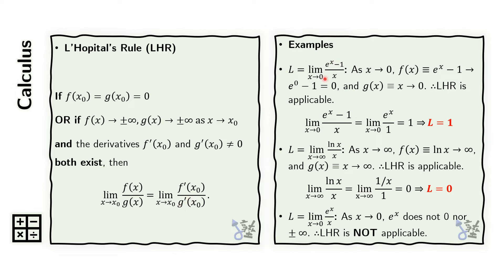In this expression, the numerator approaches 0 as x approaches 0, and the same is true with the denominator. So we have satisfied one of the conditions for L'Hôpital's rule to be applicable. We can now take the derivative of the numerator, which is e to the x, and divide it by the derivative of the denominator, which is 1. We take the limit of that as x approaches 0 and we see that this evaluates to 1.